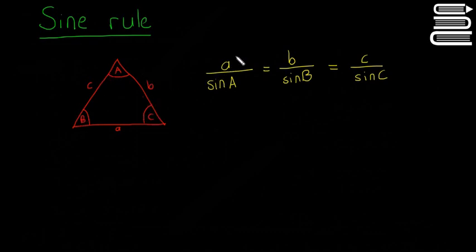So the length of side A divided by sine of the angle A is equal to B over sine B is equal to C over sine C. So it's the length divided by sine of the angle facing it.